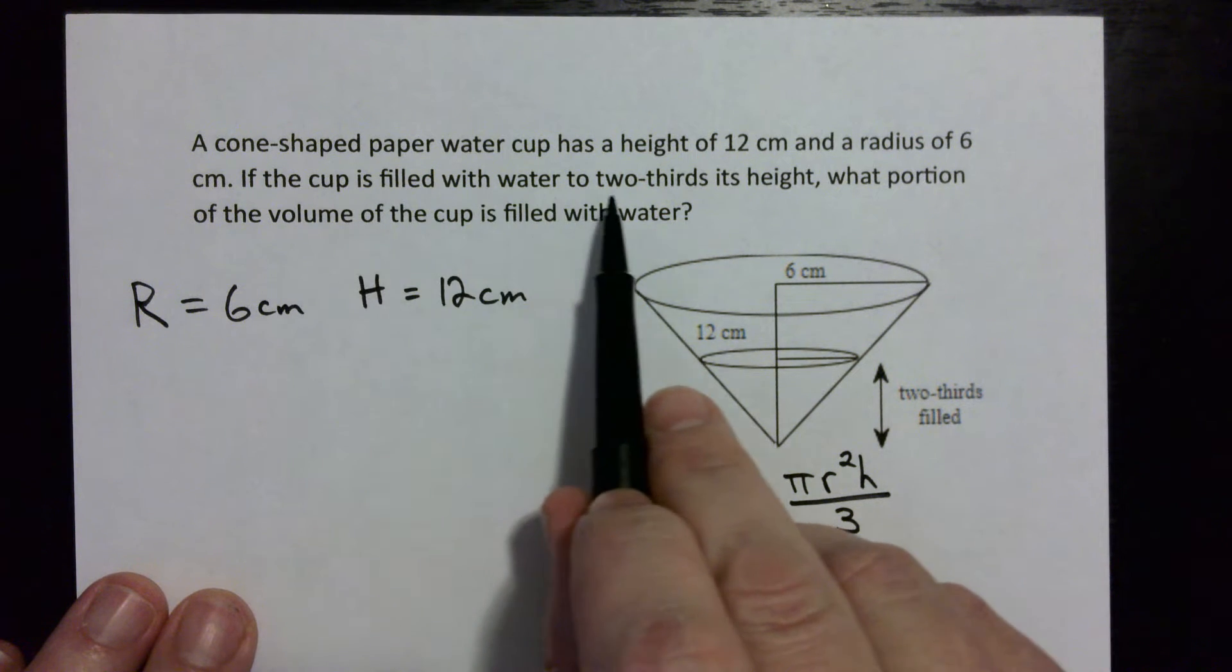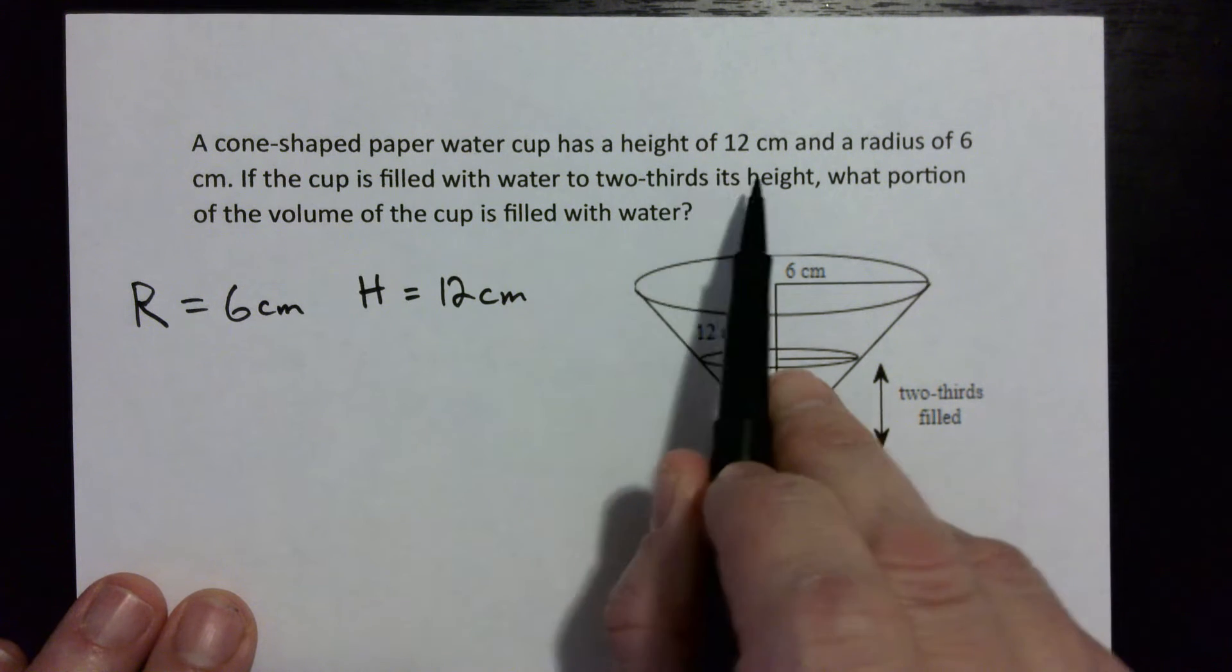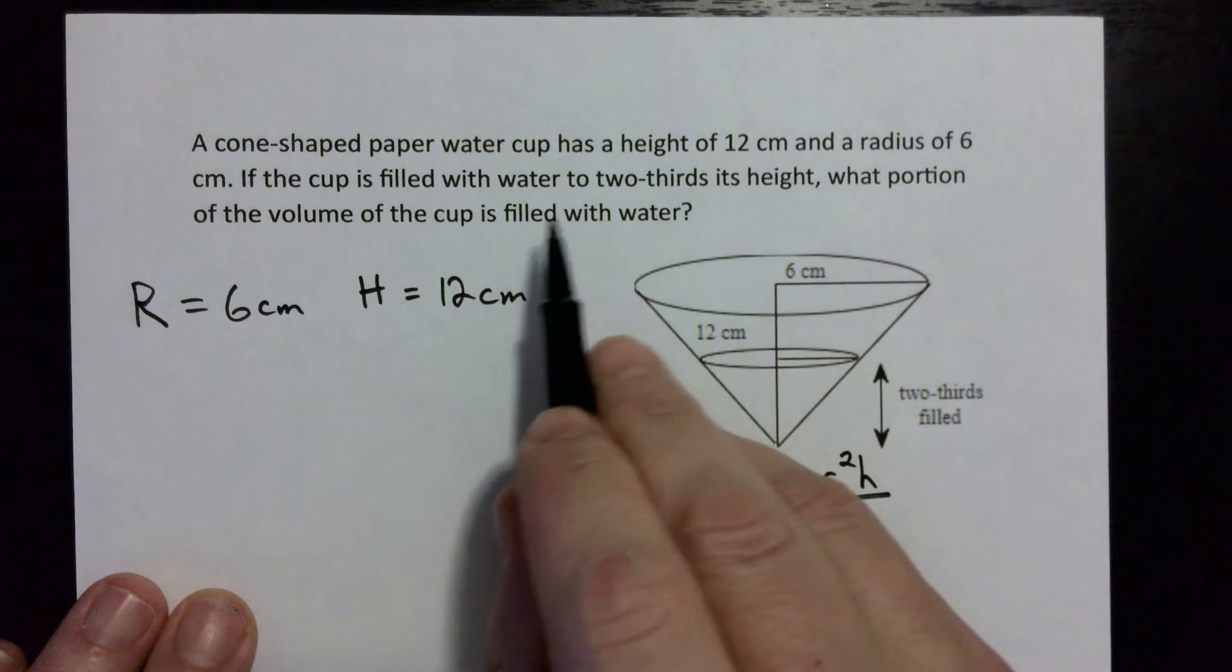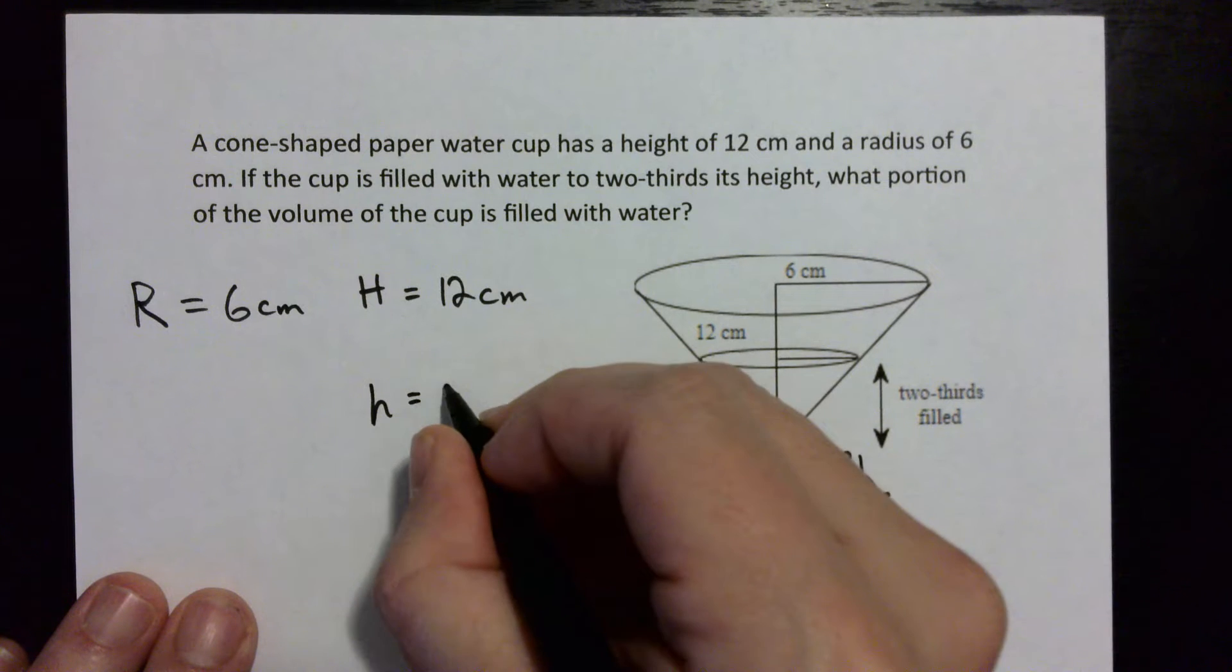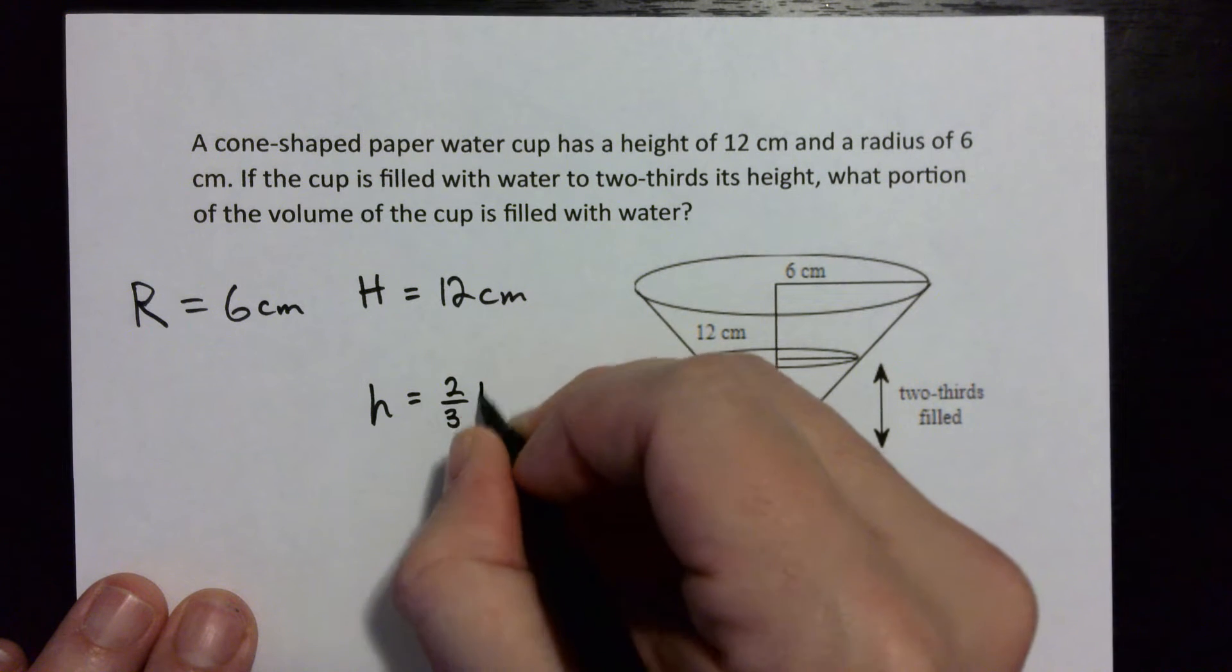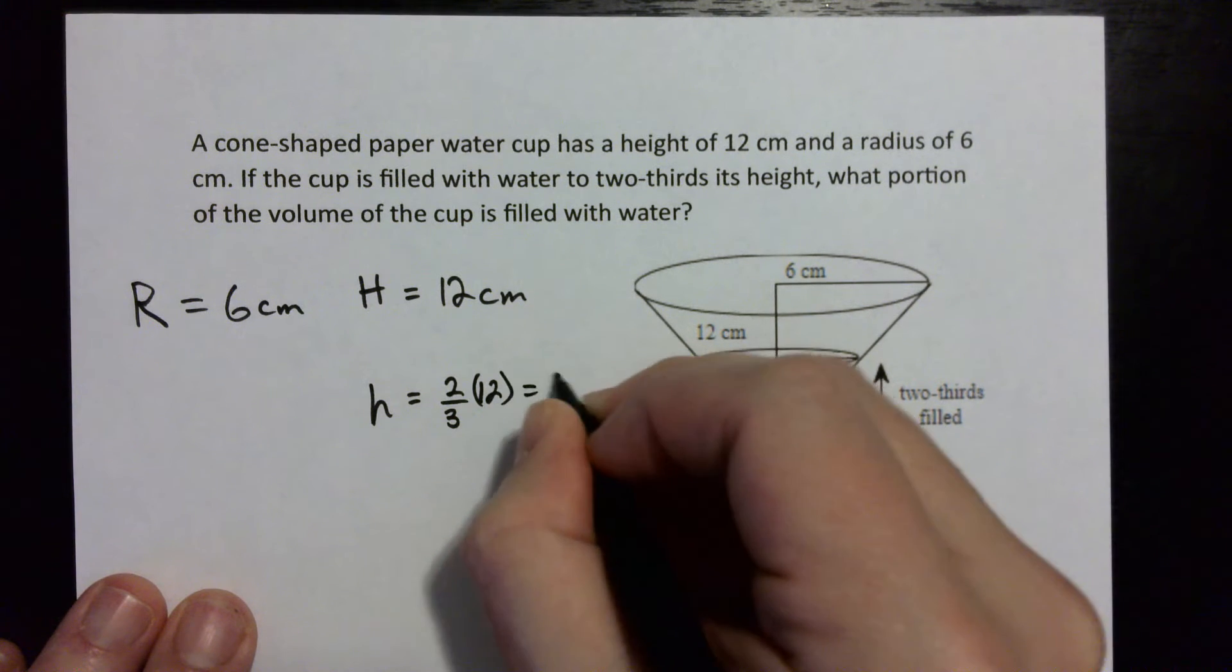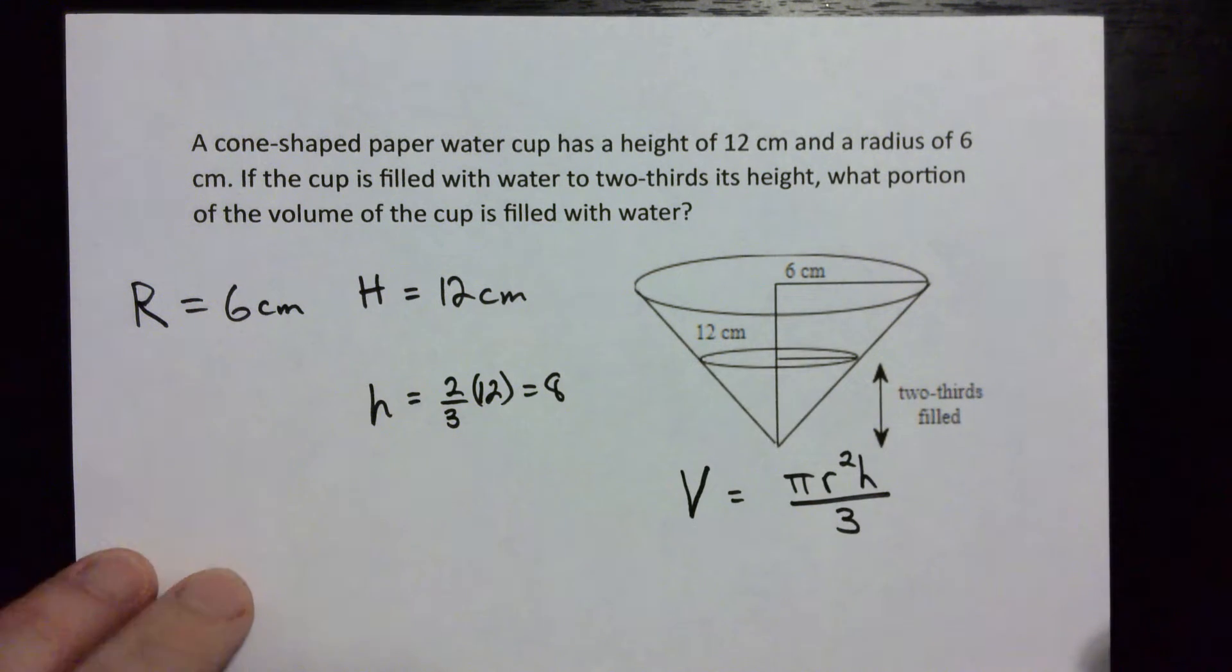Okay, and then it says if the cup is filled with water to two-thirds its height, two-thirds its height, so to find the new height we just multiply the height which is 12 by two-thirds. So little h is two-thirds times 12 which is 8.